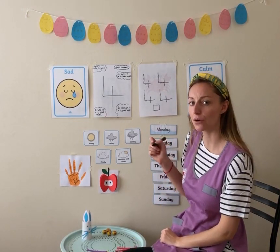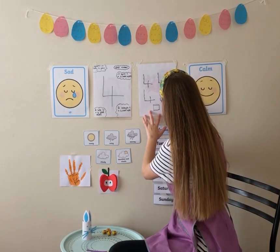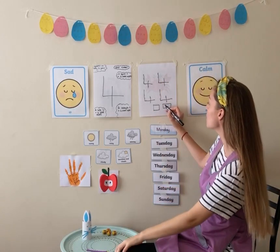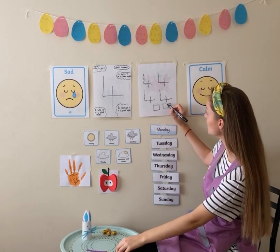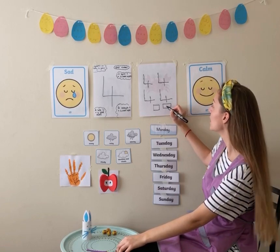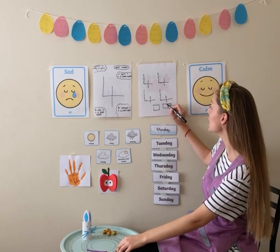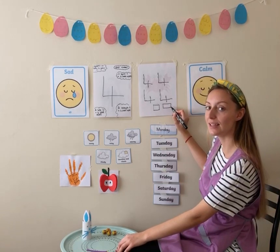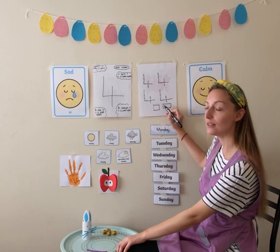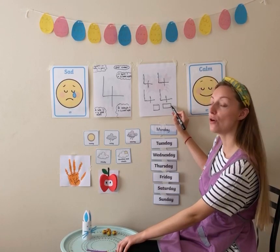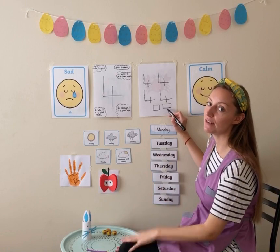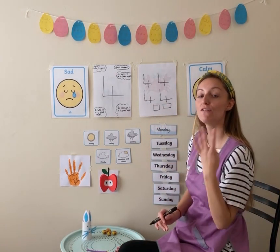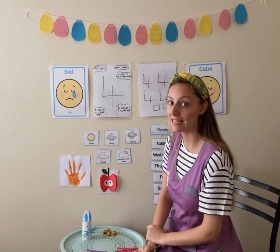What about a rectangle? Here, we have a rectangle which has 2 equal long sides and 2 equal short sides. Let's count them: 1, 2, 3, 4. Very good everybody. So, the rectangle and the square, they are 4-sided shapes.